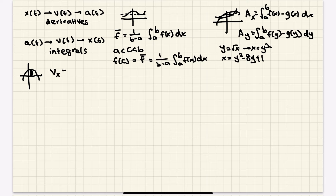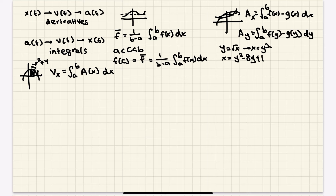The equation for volume with respect to x is the integral from a to b of the area function A(x) dx, where a and b are the lower and upper bounds. That area function is in terms of f(x). For example, if f(x) is negative x squared plus 4 and you're doing squares, the area is just f(x) squared — so it's (negative x squared plus 4) squared dx. You can do the same thing with y: V(y) equals the integral from a to b of A(y) dy.